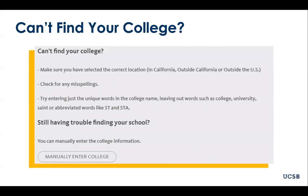Keep in mind that you can always search using the city the college is located in. We much prefer that you find your college using the search bar, but if you are searching for a college outside of California or outside of the US and cannot find it, you can use the manually enter college option below the search results in order to proceed.